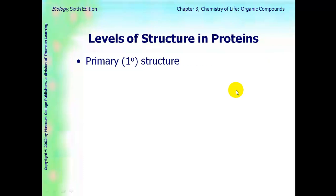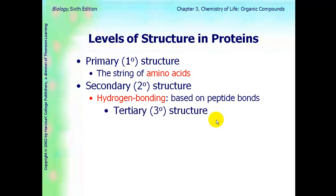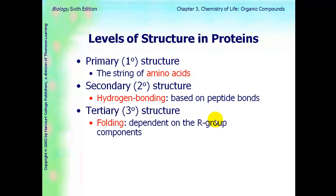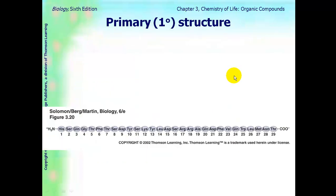There are four levels of structure in proteins. Primary, which is the string of amino acids. Secondary, which is caused by hydrogen bonding. Tertiary, which is folding of the R groups. And quaternary, which is more than one protein being associated together. I'm going to go through examples of these.